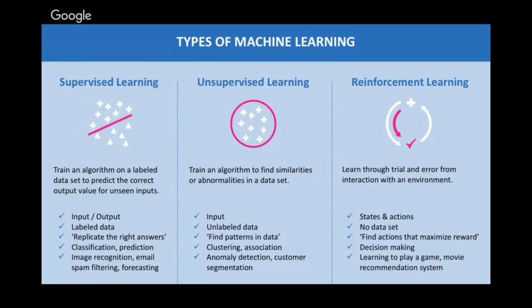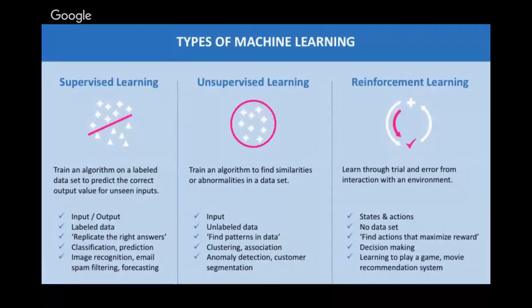For supervised learning, we provide the model both the input and the output, and each time it tries to learn from its mistakes. However, the big problem with supervised learning is labeled data — it takes a lot of time and is costly to label all the data, because it needs to be done manually.